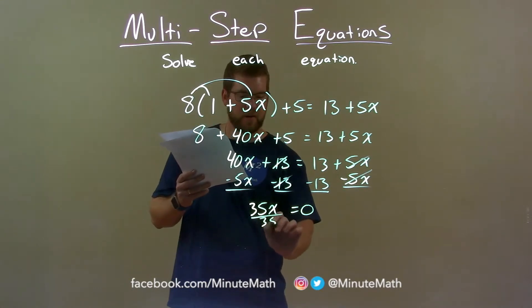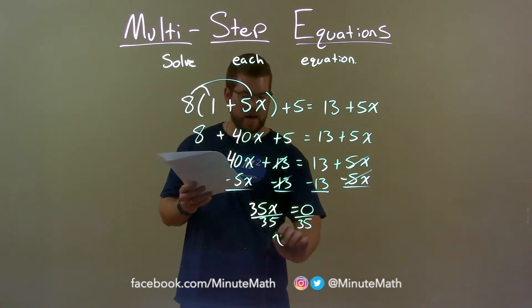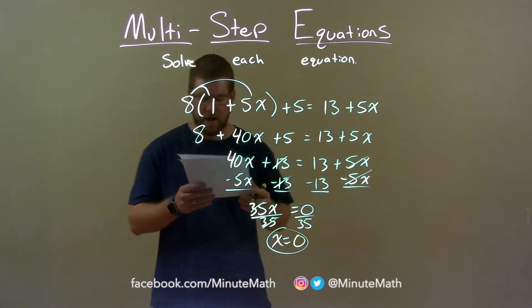Divide both sides by 35 now. Remember, 0 divided by anything is 0 so x is by itself equal to 0. And there we have our final answer.